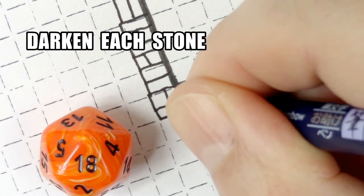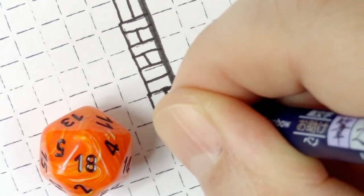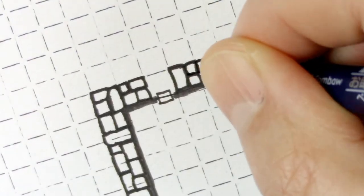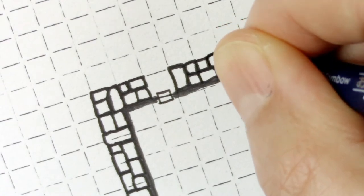Then we're going to darken each stone. This is where we take a little bit of extra care to really outline each stone and really make it pop.